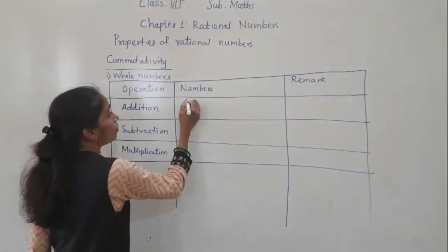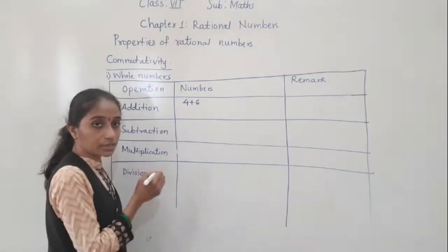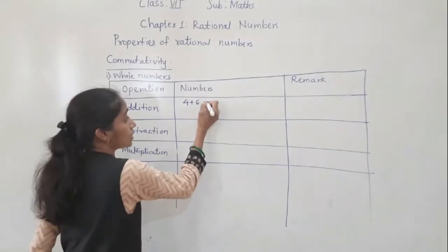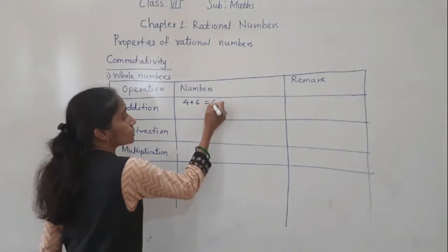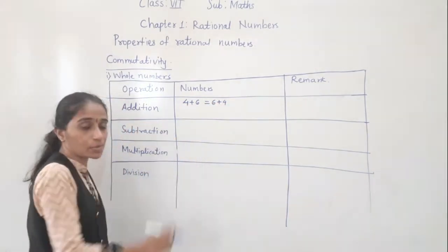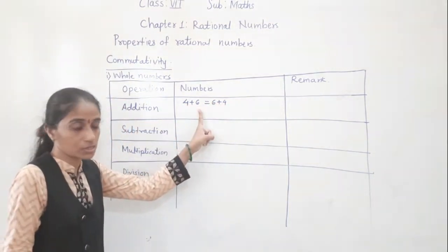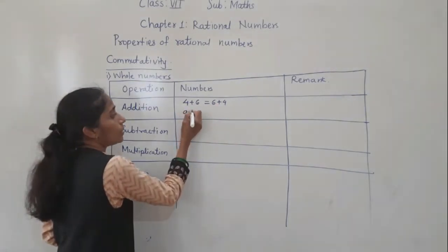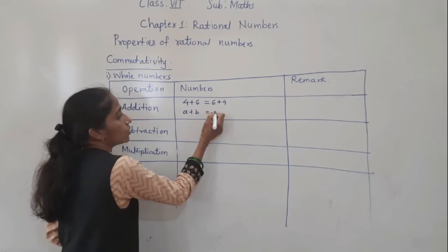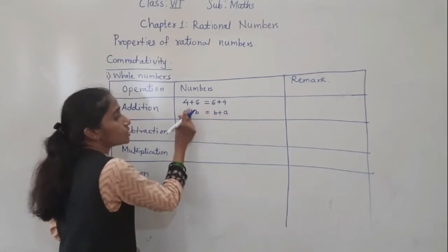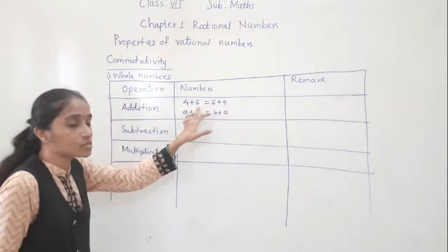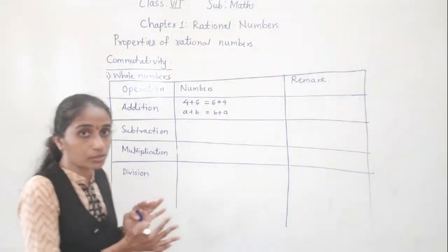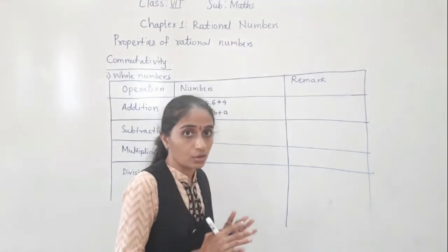See now, 4 plus 6. Now what does this property show? It shows 4 plus 6 is equal to 6 plus 4. These are whole numbers. So a plus b is equal to b plus a — both give the same answer. 4 plus 6 is equal to 10 and 6 plus 4 is equal to 10. Even if you change the order, the answer remains the same.